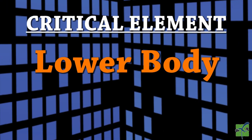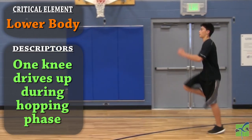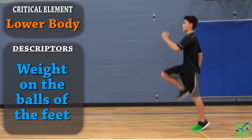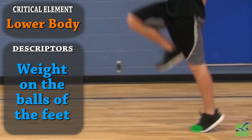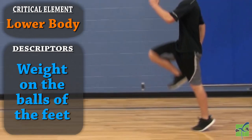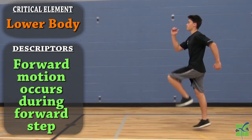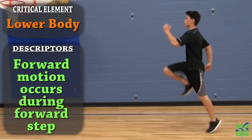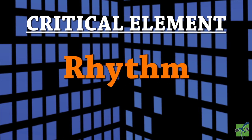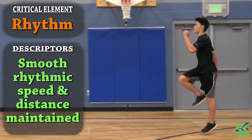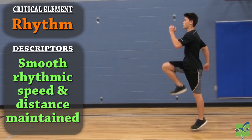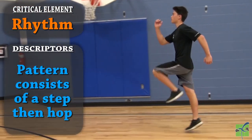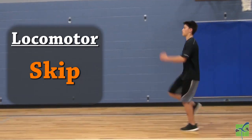The lower body: the opposite knee drives up during the hopping phase. The weight is on the balls of the feet throughout the movement. Forward motion occurs during the hop and during the forward step. Rhythm: a smooth, rhythmic speed and distance is maintained throughout the movement. The pattern consists of a step and then a hop. Locomotor skip.